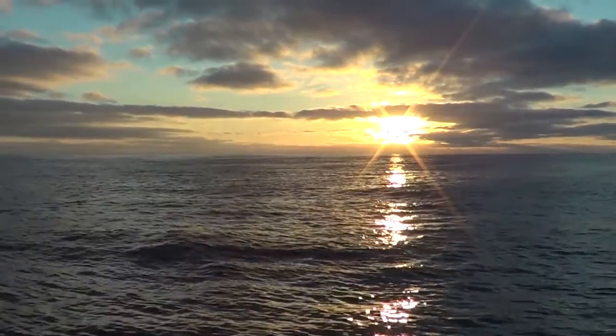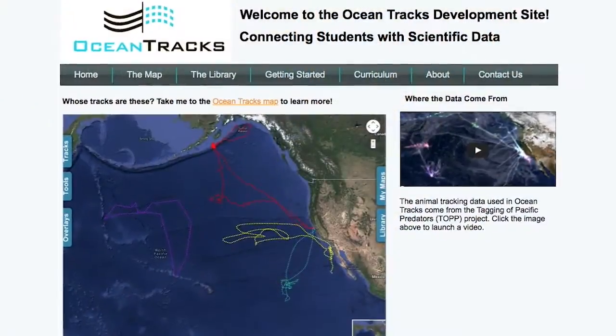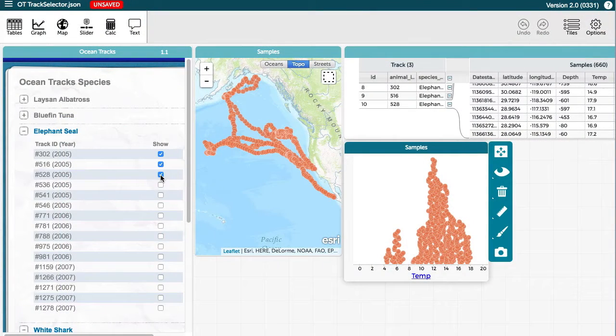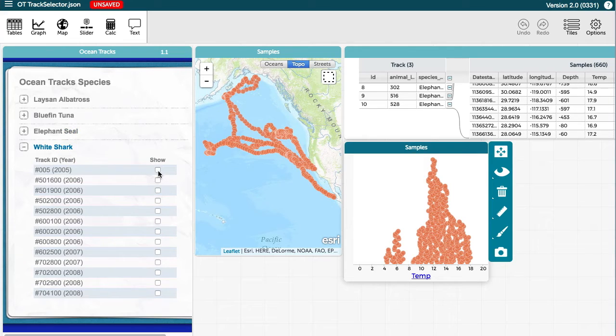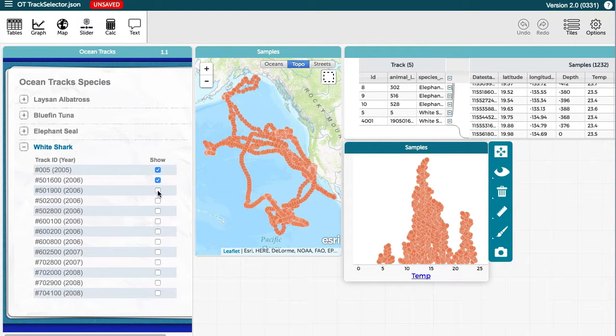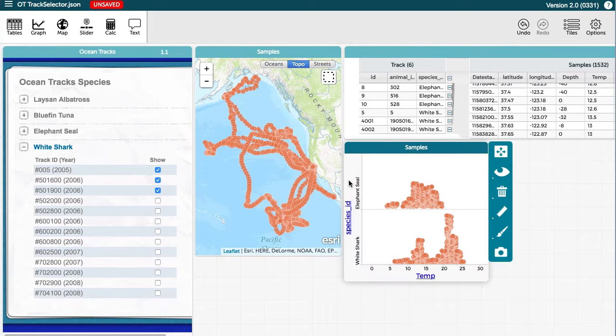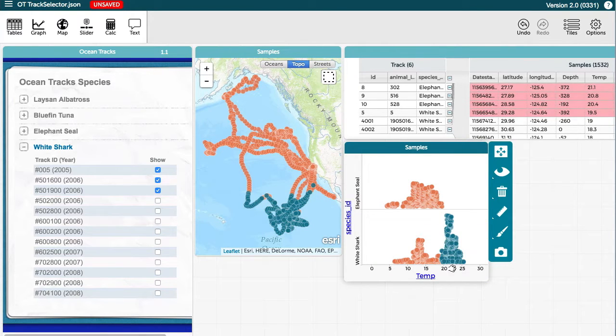Another group we've worked with at the Education Development Center, they have a project called Ocean Tracks. When we took the Ocean Tracks track selector from their website and we put it into CODAP, now you have this big long list of sea animals. And that data flows into a map, into a table, into graphs, and you get to play with them.